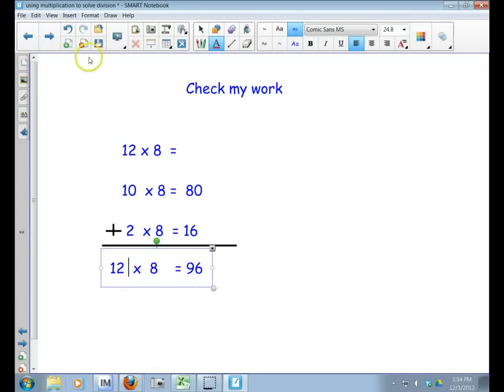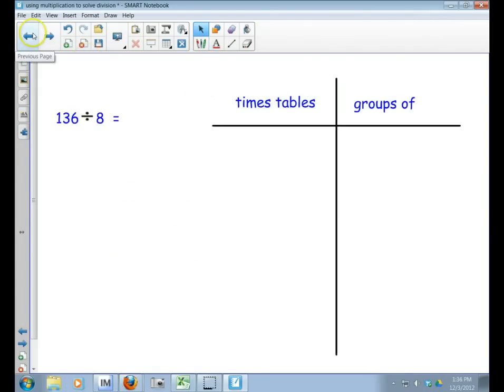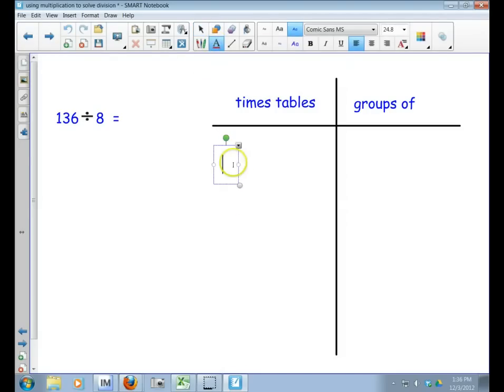Let's try another one. Now we're going to start with 136 divided by 8. I'm going to start with my groups of 10 again because that's very easy to work with. Let's say it's the Snickers bars again—I had 136 Snickers bars and want to share them with 8 friends. I'm going to start with 10 groups: 10 groups of 8 equals 80.